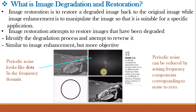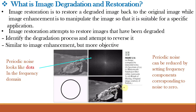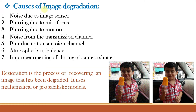The periodic noise can be reduced by setting the frequency components corresponding to noise to 0. Using the Butterworth band reject filter, those frequency components are set to 0 and we obtain our enhanced image. This is known as image restoration — bringing the image back to what it would have been if recorded without degradation.